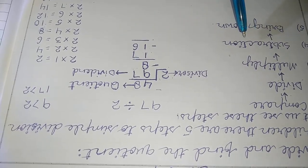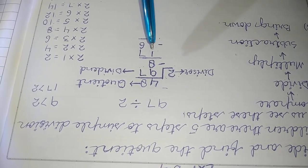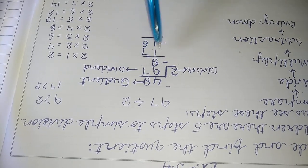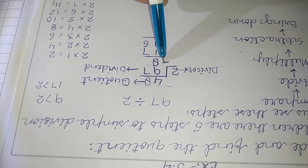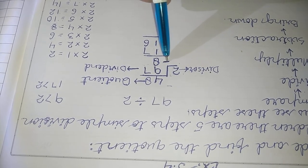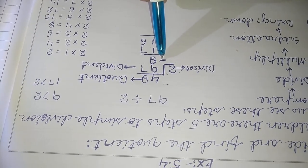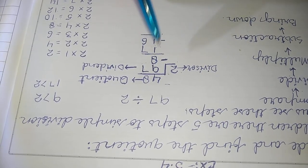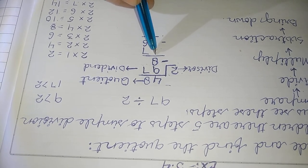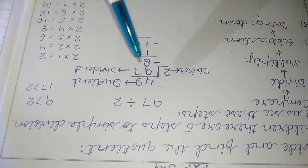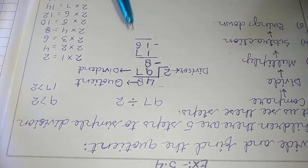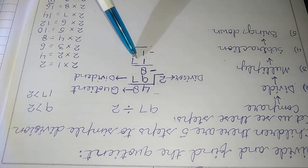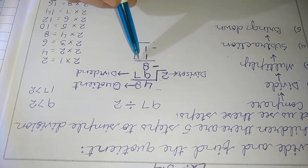Step 4 is to subtract. We subtract 8 from 9, which equals 1. Don't forget to write the subtraction sign. We write this 1 in the tens column. Step 5 is to bring down — we bring down the next digit, which is 7.